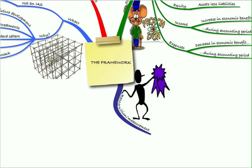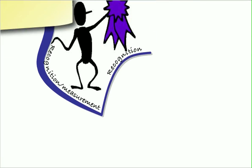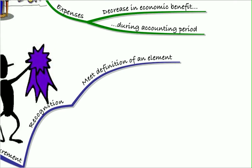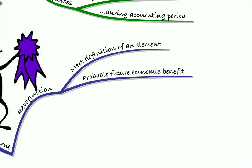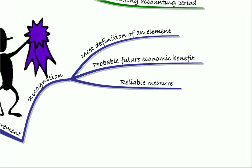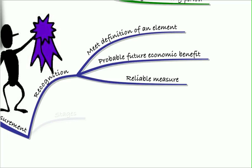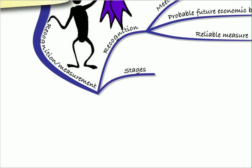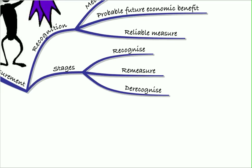The framework also tells us when we need to recognise assets and liabilities and gives us some ways to measure them. When it comes to recognition, they must meet the definition of an element, an asset, a liability, etc. For an asset there would need to be probable future economic benefit. And for all of them we'll need to get a reliable measure. We can't bring it in if we don't have a reliable measure. So the stages will be to recognise it, re-measure it and de-recognise it based on how you use whatever it is we're looking at.